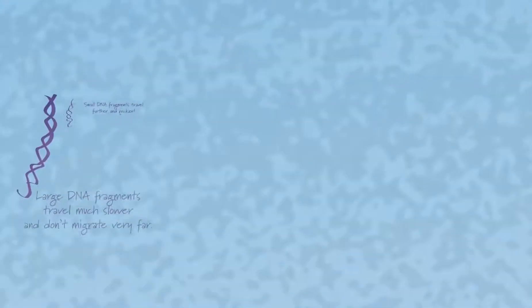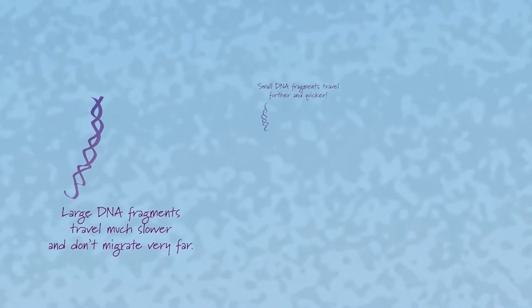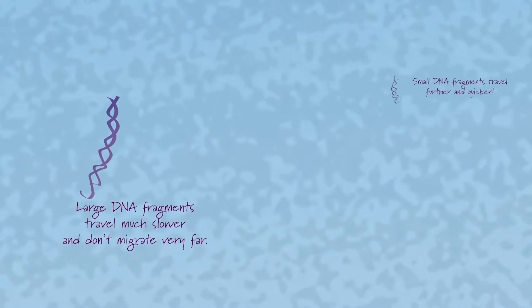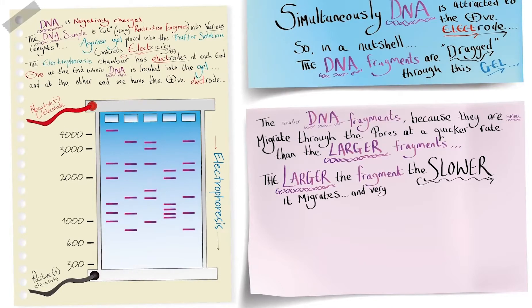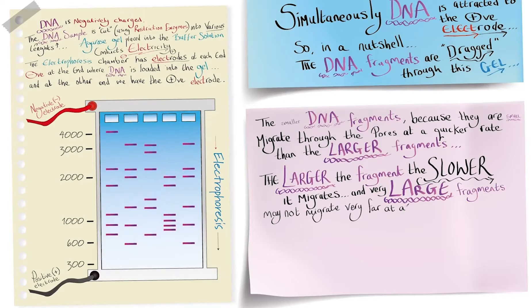The smaller DNA fragments, because they are small, migrate through the pores at a quicker rate than the larger fragments. The larger the fragment, the slower it migrates, and very large fragments may not migrate very far at all.